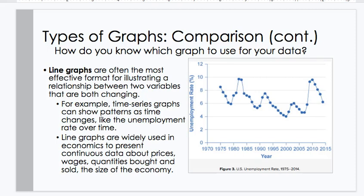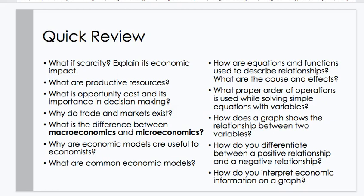Types of graphs comparisons continued, how do you know which graph to use? Line graphs are often the most effective format for illustrating a relationship between two variables that are both changing. For example, time series graphs can show patterns as time changes, like the unemployment rate over time. Line graphs are widely used in economics to present continuous data about prices, wages, quantities bought and sold, and the size of the economy. So a quick review from Module 1, what is scarcity explained its economic impact? What are productive resources? What is opportunity cost and its importance in decision-making? Why do trade and markets exist? What is the difference between macroeconomics and microeconomics? Why are economic models useful to economists? What are common economic models? How are equations and functions used to describe relationships? What are the cause and effects? What proper order of operations is used while solving simple equations with variables? How does a graph show the relationship between two variables? How do you differentiate between a positive relationship and a negative relationship? How do you interpret economic information on a graph?